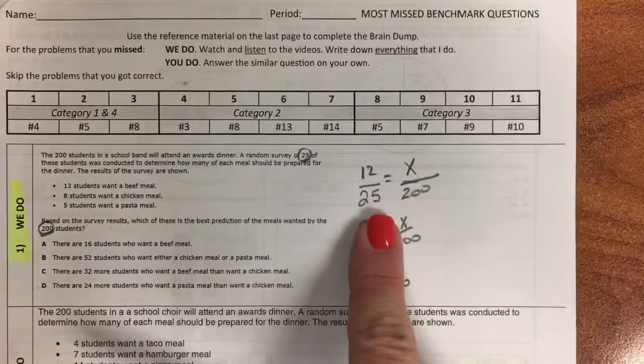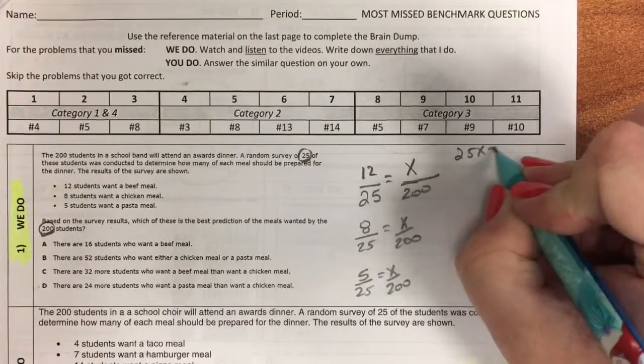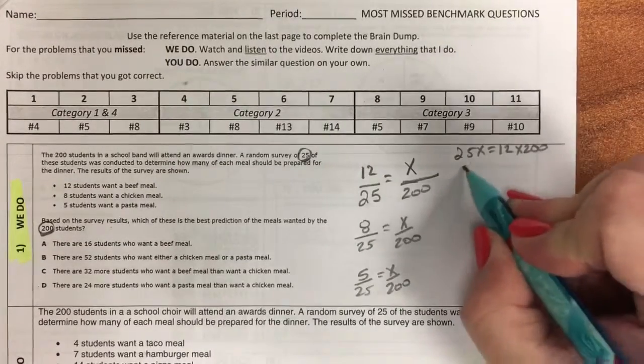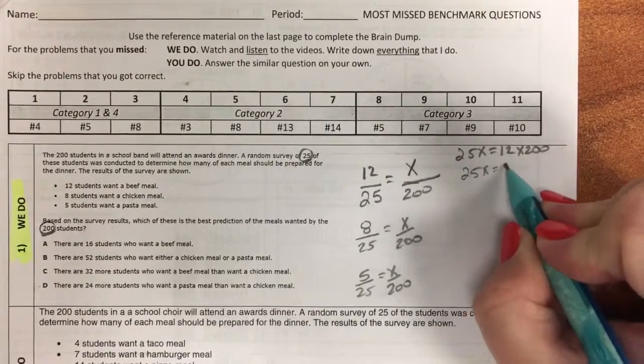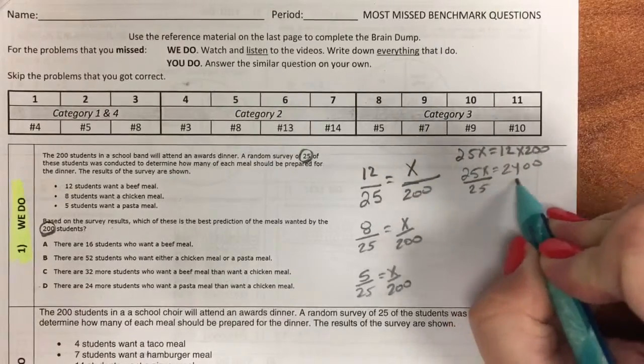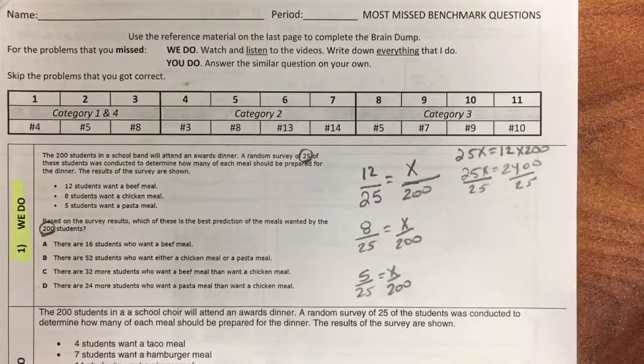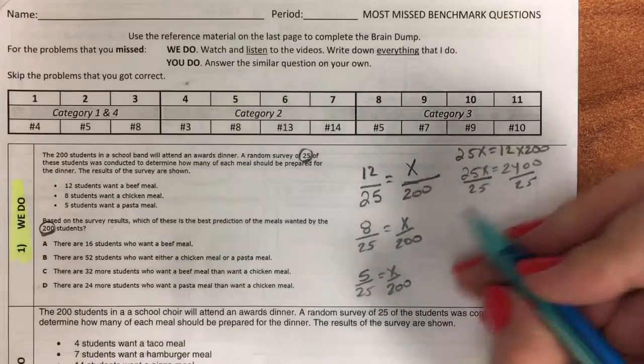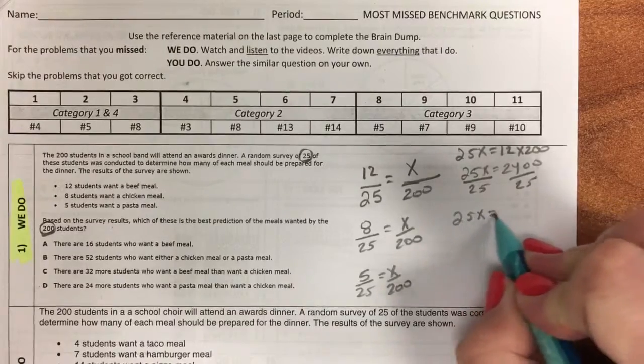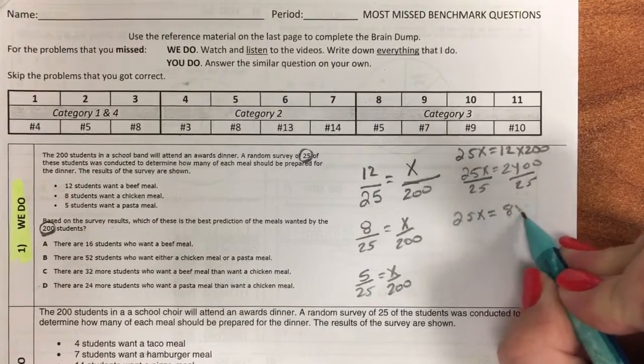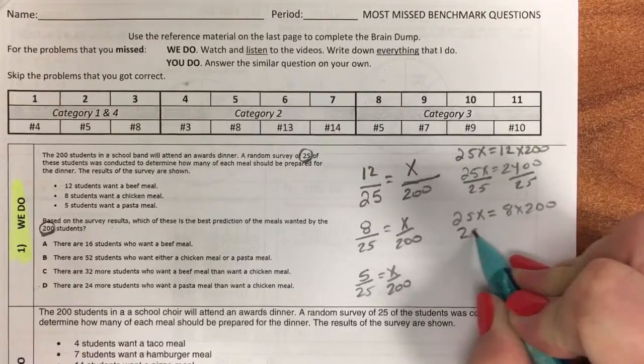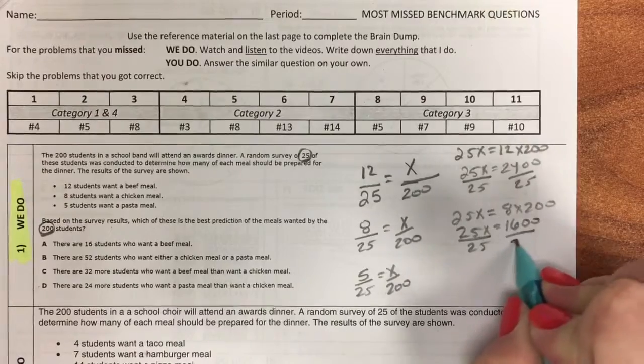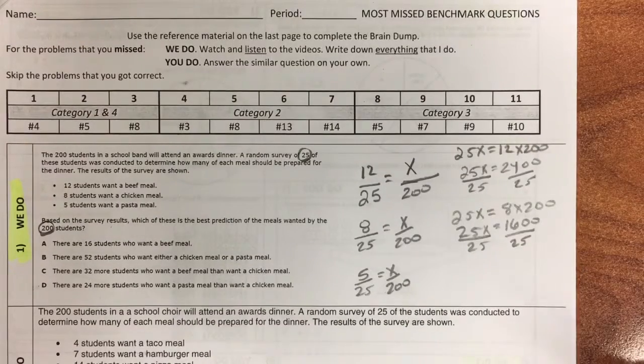So to solve our proportion, we just cross multiply: 25x is equal to 12 times 200. 12 times 200 is 2400, divide by 25. You're going to need some scratch paper to do that part. Then we have 25x is equal to 8 times 200. So 25x is equal to 1600 divided by 25.